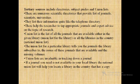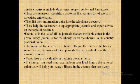Finally, the tertiary sources include dictionaries, subject guides, and union lists. There are numerous scientific directories that provide lists of journals, scientists, universities, etc. — their information is quite like a telephone directory, which helps the researcher to tap appropriate journals and expert advice on the topic. The union list is the list of all journals available either in a given library or the libraries of the country. It tells the researcher about the journals the library subscribes to, the issues available, and the missing volumes. They are invaluable in tracking down a journal — if a journal the researcher needs is not available in a particular library, the national list will help locate the library or place where the copy exists.